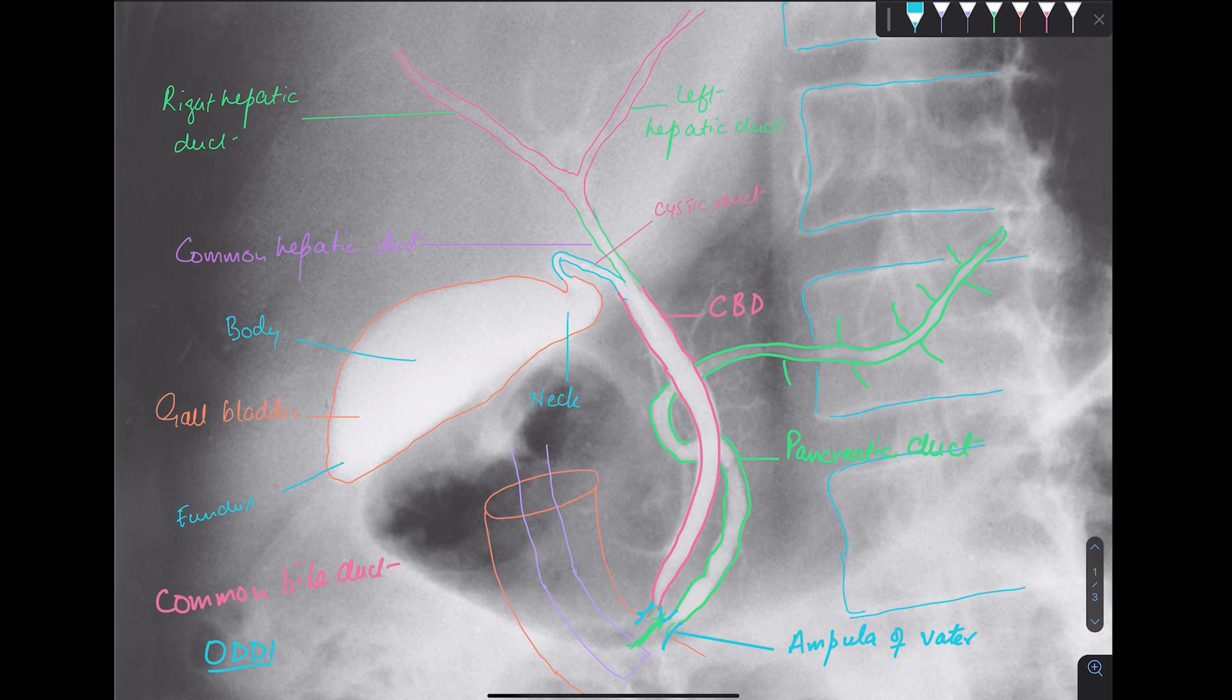So now let's quickly recap. Two hepatic ducts, the right and the left, they join to give us what? Common hepatic duct. And common hepatic duct, after joining with this cystic duct, we get what? Common bile duct. And then this common bile duct is running downwards. And there you can see from the pancreas we have this pancreatic duct, which is coming and joining this common bile duct. And both of them open into the second part of the duodenum.